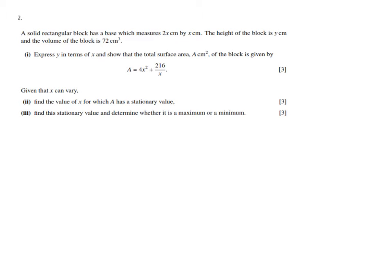This is another very typical question you can get on your AS Maths exam involving differentiation. The credit goes to Cambridge because this is their question. Please check my website ExplainingMaths.com for all my free resources. The question says a solid rectangular block has a base of 2x by x centimeters, the height of the block is y centimeters, and the volume is 72 centimeters cubed.